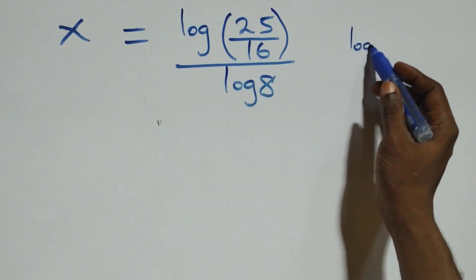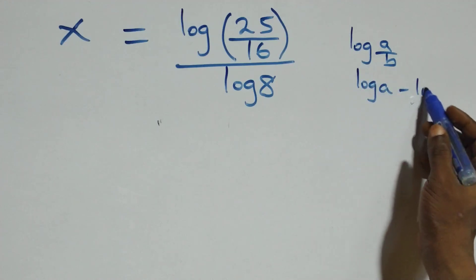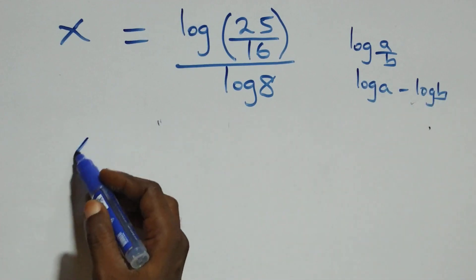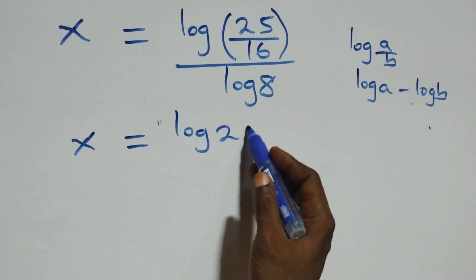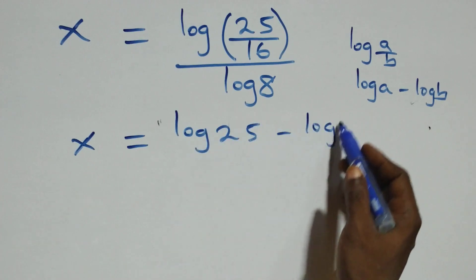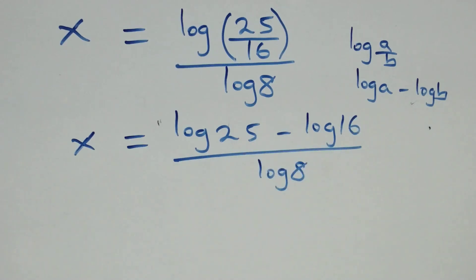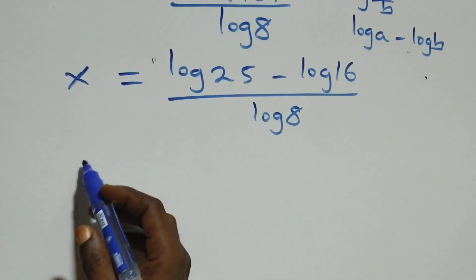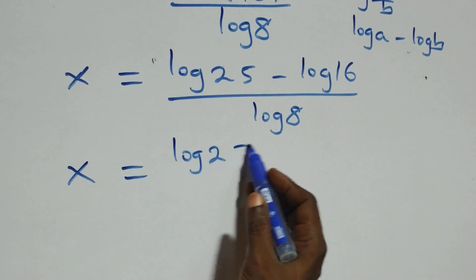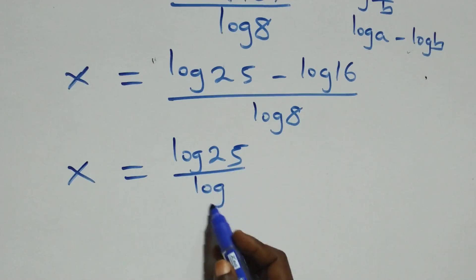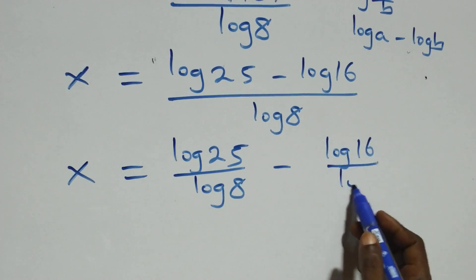Then, using the log quotient law — when we have log(a/b), this can be written as log a minus log b — all we have becomes x equals log 25 minus log 16, all over log 8. We then separate this into two fractions: x equals log 25 over log 8 minus log 16 over log 8.